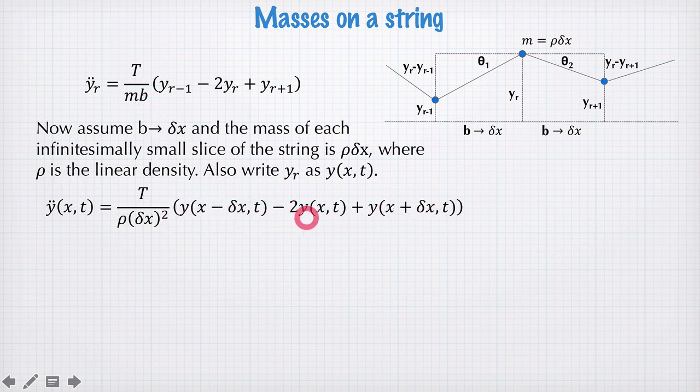one of y(x - δx, t), y(x,t), and y(x + δx, t). So that used to be yr minus 1, yr, and yr plus 1.